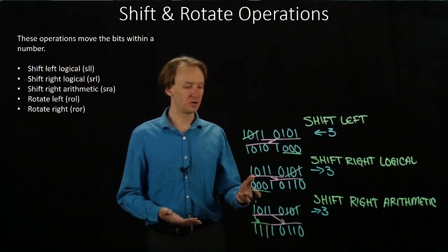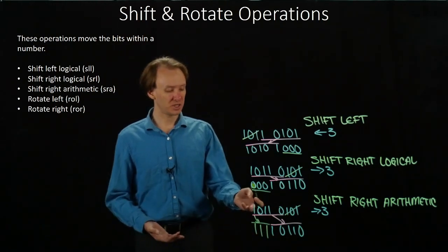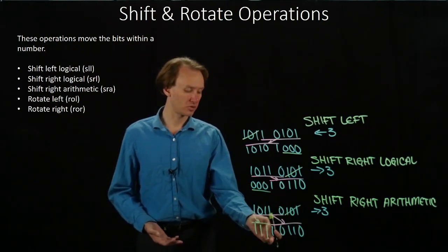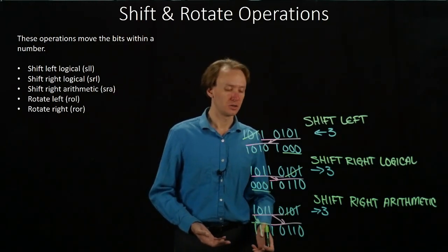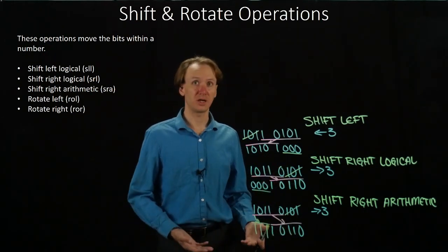So if that sign bit was a zero, I would still have three zeros there. But in this case, the sign bit is a one, so I end up with three leading ones. That means that since this number was negative before, it still looks negative afterwards.